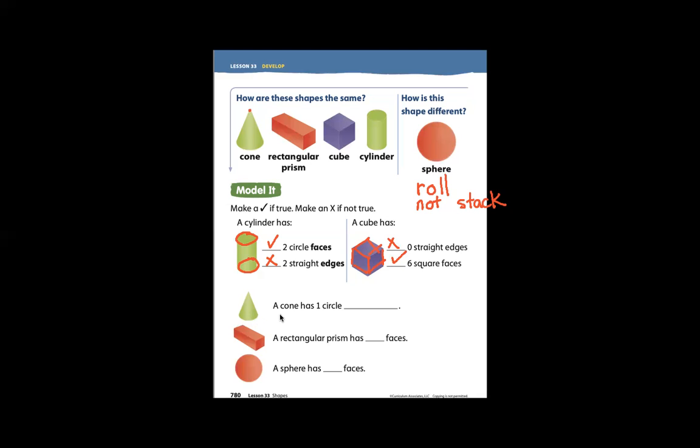A cone has one circle face. A rectangular prism has six faces.